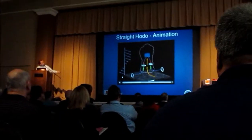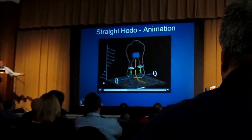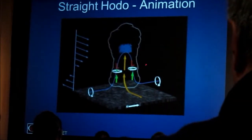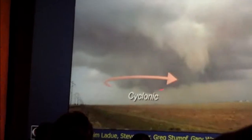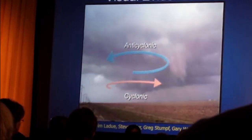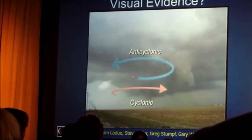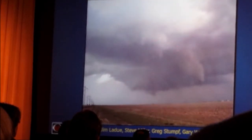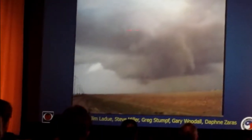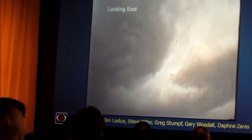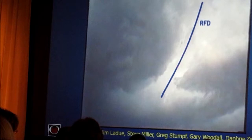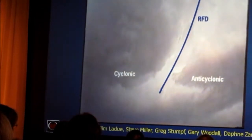So there's our updraft, cyclonic rotation on the south flank, anti-cyclonic rotation on the north flank. There is the cyclonic member in the background to the north. There's the clear slot from the rear flank downdraft, anti-cyclonic rotation here to the south. Looking up the backside of the very rear portion of the supercell. There's the clear slot from the rear flank downdraft.